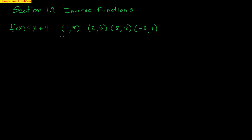So the inverse function is a function that does the opposite. It will take 5 and give us 1, take 6 and give us 2, take 12 and give us 8, and take 1 and give us negative 3. The way we represent an inverse function is we write f of x but put a little negative 1 as a superscript — it doesn't mean it's an exponent.